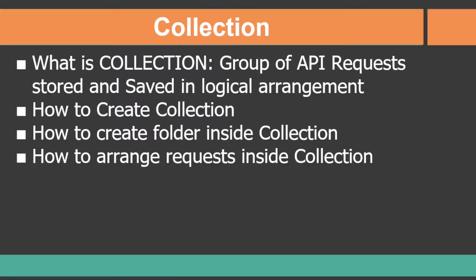In this lesson, I am going to teach you what is a collection, how to create collections in Postman, how to create folders inside the collections, and how you can arrange requests inside the collections. First of all, what is a collection? The collection is a group of API requests stored and saved in logical arrangement. Let's assume you have a big project and you have to execute around hundreds of API requests as part of the project validation — you can logically divide these hundred API requests by using collections.